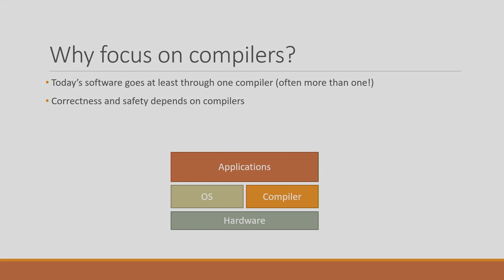Why did we focus on compilers? There are so many things to verify, why here? I'm biased because I like compilers, but the point is they are super important. Every single program in the world goes through a compiler, and these days usually more than one. All applications go through the compiler; the operating system goes through the compiler; the compiler is compiled using a compiler; even a lot of hardware today is compiled through a compiler. Without compilers, there are no computers. So we really want compilers to be good.